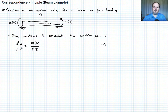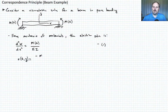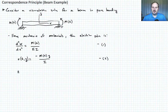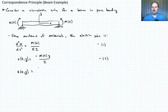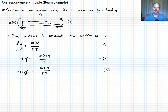The stress, which is a function of time and position y through the beam, is negative M(t) times y over I — call that equation two. The strain, also a function of time and position y, is stress divided by Young's modulus, so M(t)·y over EI — call that equation three. We could also solve for slope and deflection, but these three equations illustrate the correspondence principle.